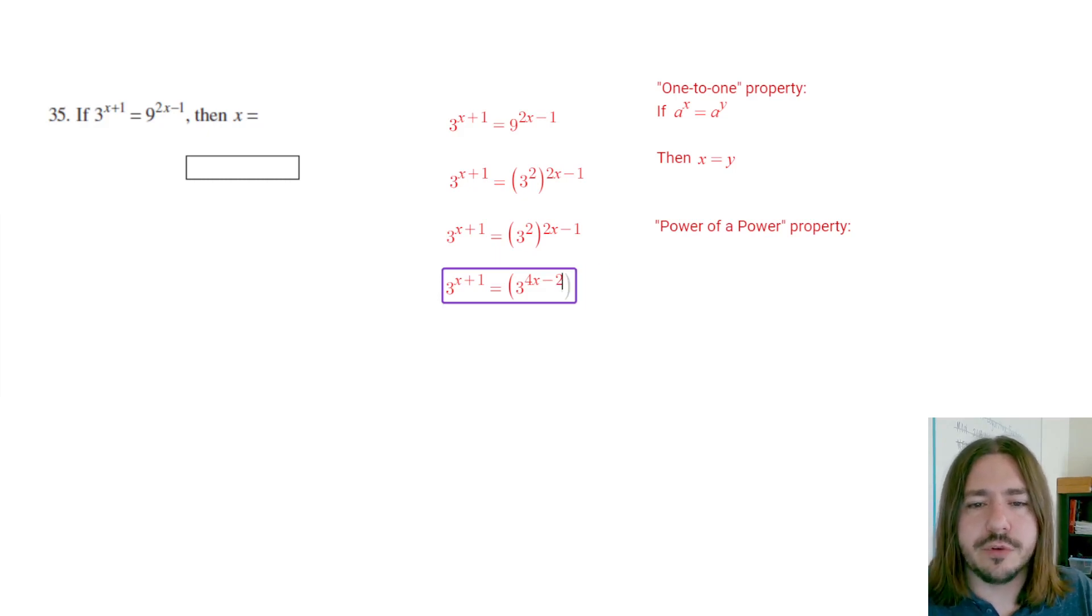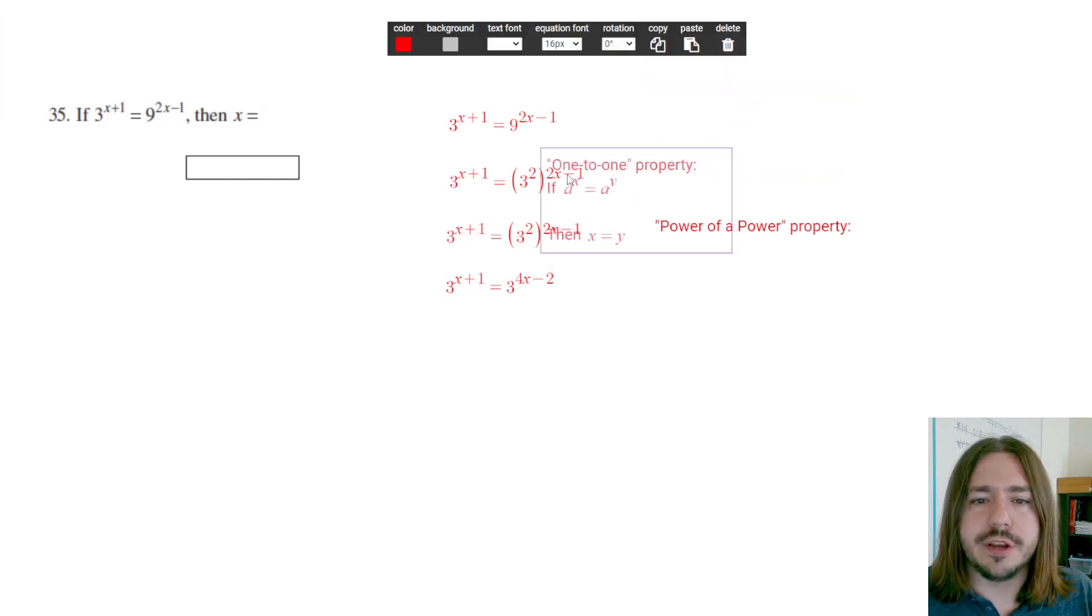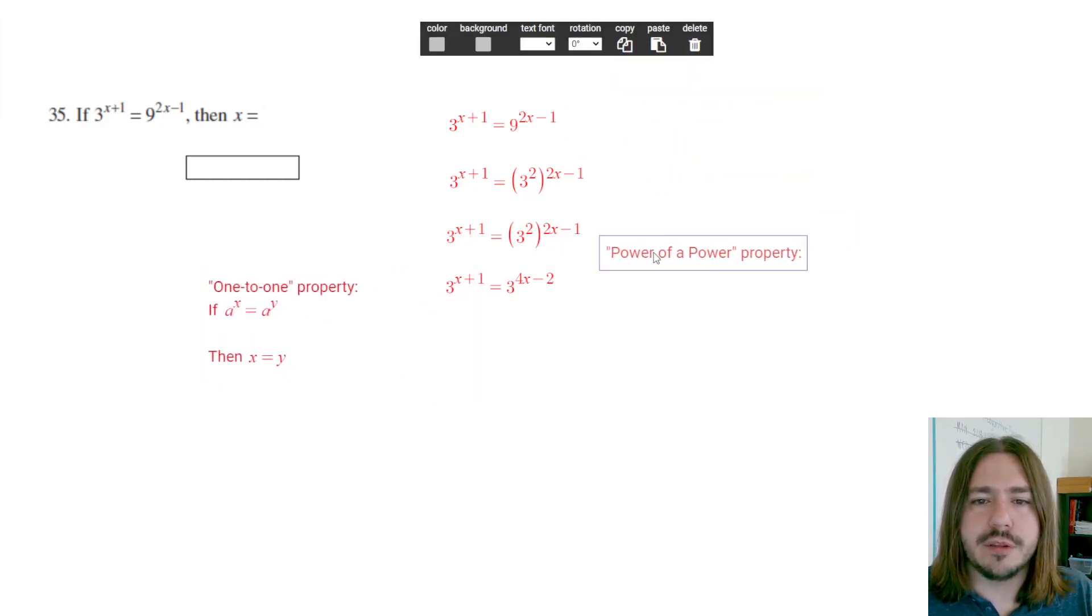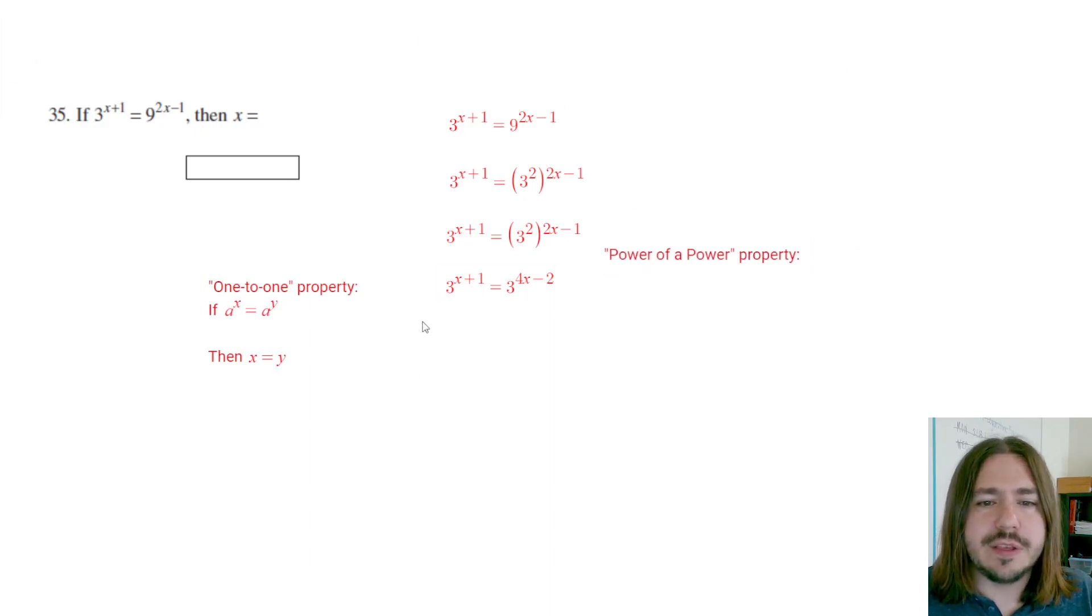So now I don't need those parentheses anymore. So now I've got the bases the same. So now I can use this one-to-one property here. So we use the power of a power property. Now we're going to use the one-to-one property and we're going to drop these bases. So we're going to set the exponents equal to each other. X plus 1 equals 4x minus 2. And now we can solve this just like a regular old linear equation.